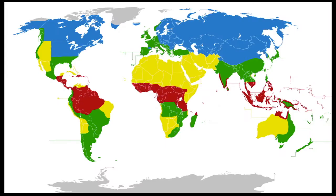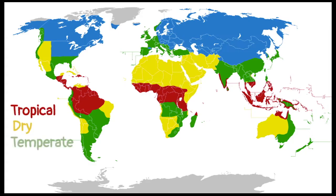Scientists divide the Earth into five main categories based on these climate patterns. The climate categories are tropical, dry, temperate, continental, and polar.